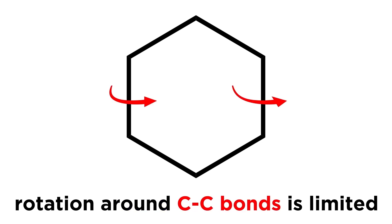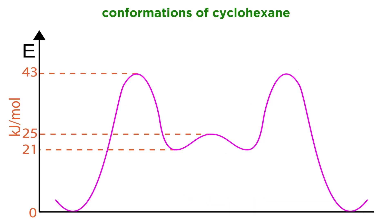In addition, rotation around these sigma bonds is somewhat restricted because the ring must remain intact while rotation occurs. For this reason, cyclohexane adopts just a couple of very specific conformations.